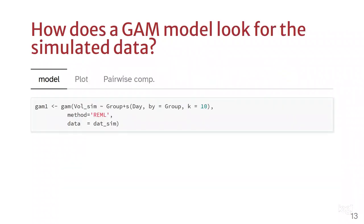Now, how does a GAM look for the simulated data I presented before? The syntax is here, the details are on the preprint from our lab, but basically we're again trying to do an interaction GAM for the tumor volume.